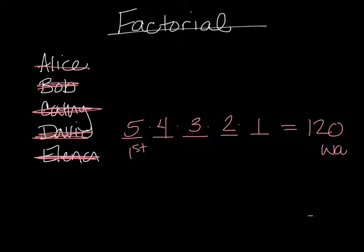So there's 120 ways these five people can finish a race if we're concerned about first through fifth place. And that's factorial.